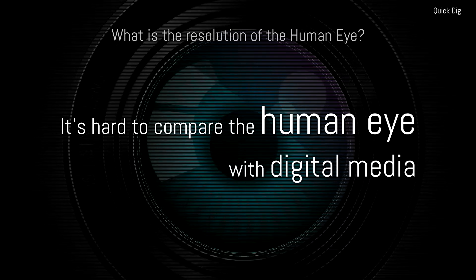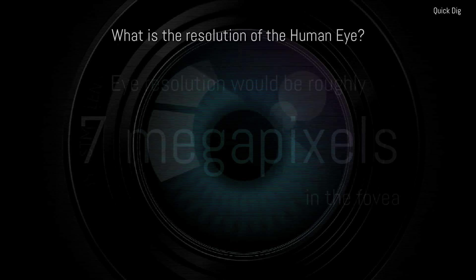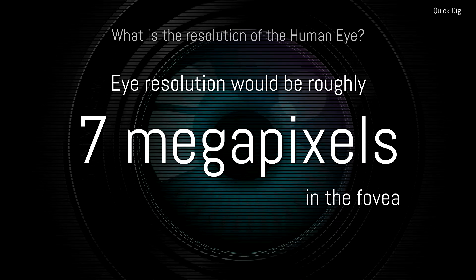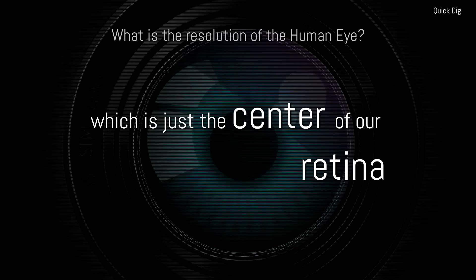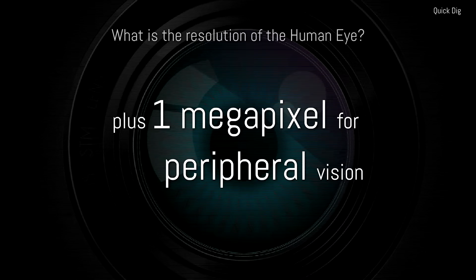It is hard to compare the human eye with digital media. Eye resolution would be roughly 7 megapixels in the fovea, which is just the center of our retina, plus 1 megapixel for peripheral vision.